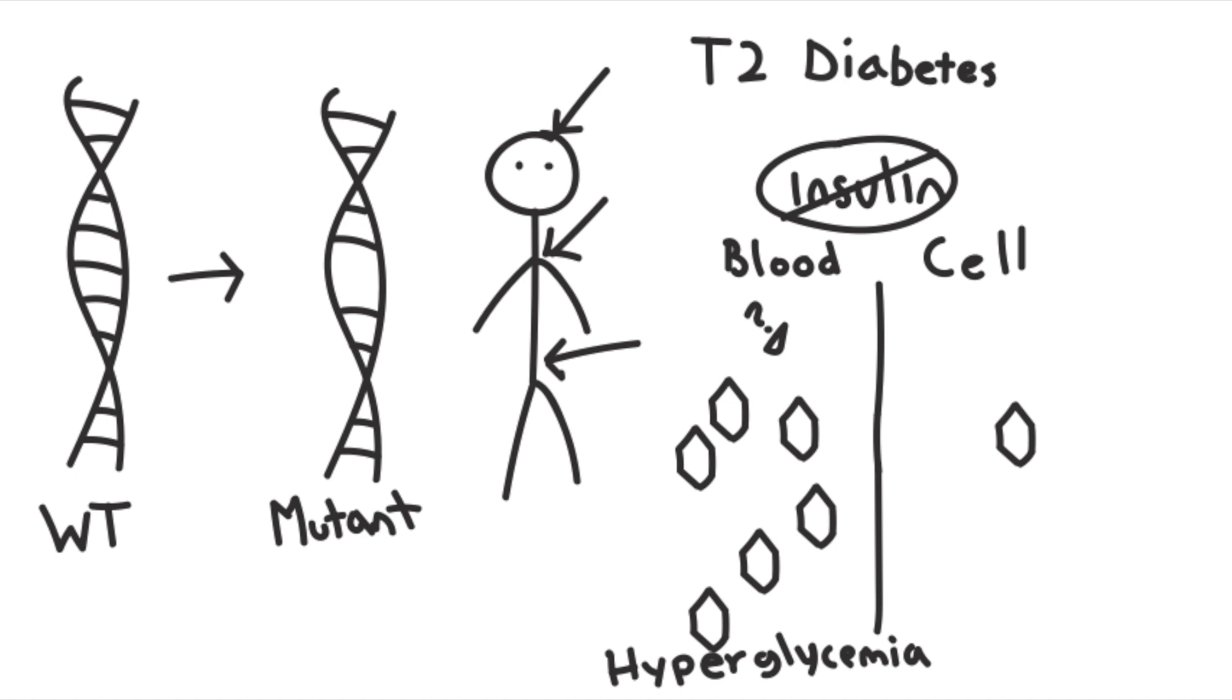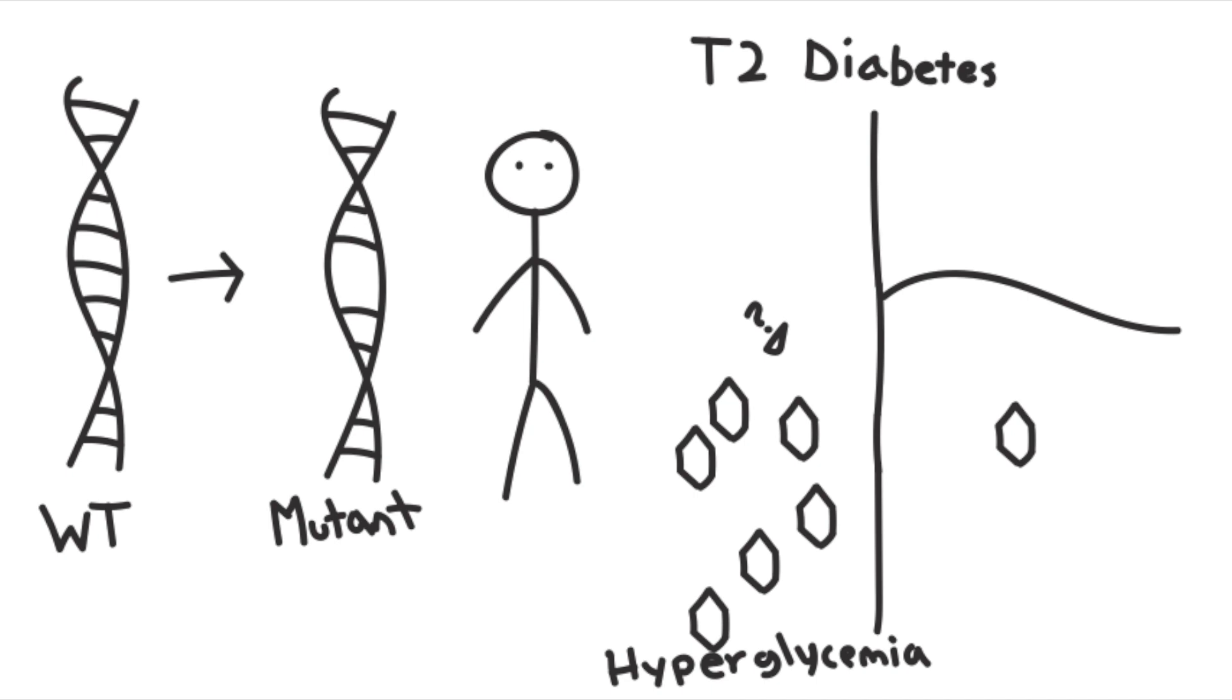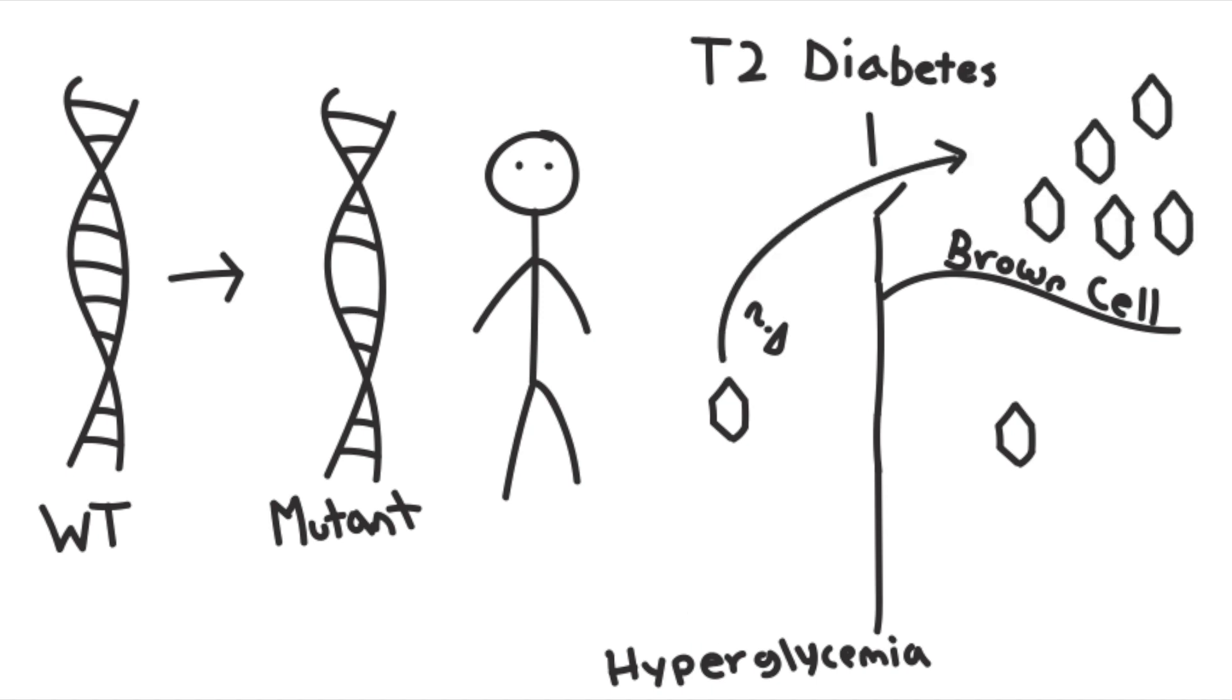This is why type 2 diabetes is bad today. However, back in the days of the Younger Dryas, this was great. This is where we revisit brown cells. Brown cells, unlike other cells of the body, do not require insulin for sugar uptake. That means that all this extra sugar that is in the bloodstream can be used to create more brown cells. More brown cells equals more heat, and more heat equals more not freezing to death in the middle of an ice age.